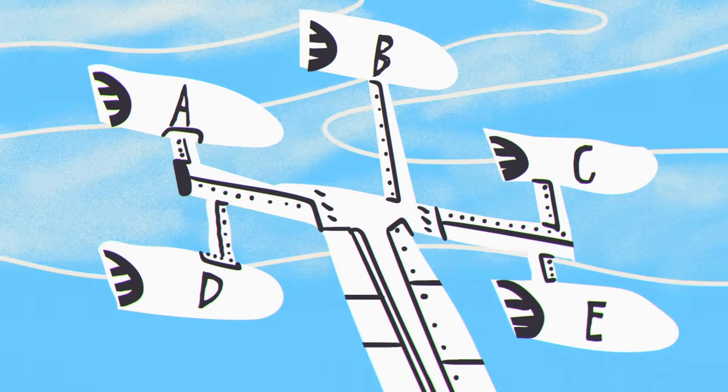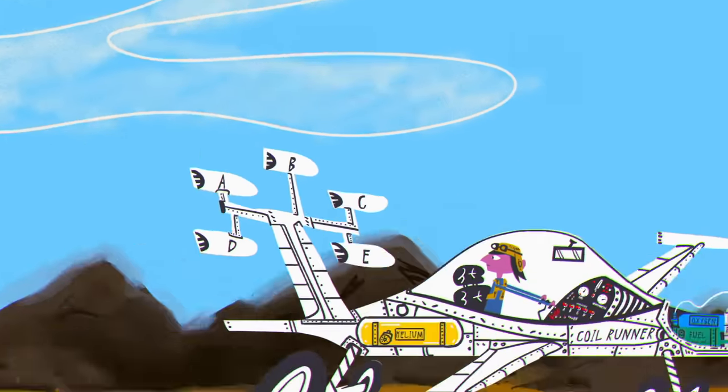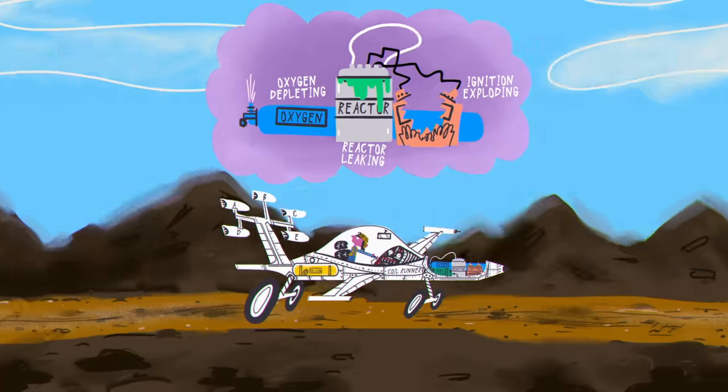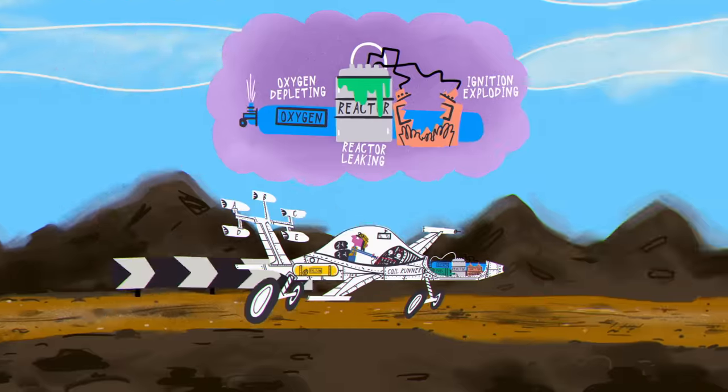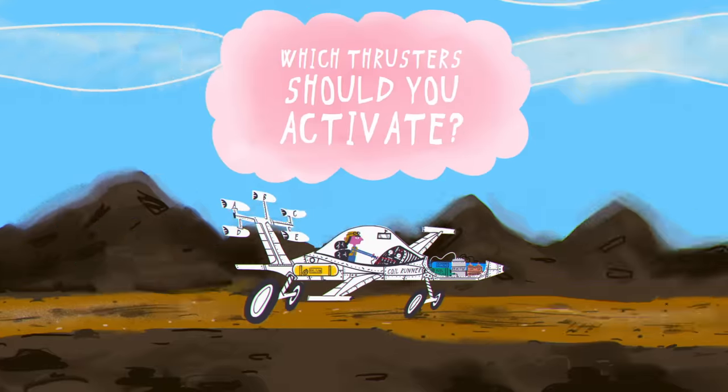You need to use as many thrusters as possible to give yourself the best chance at clearing the gap, without triggering any of the three catastrophic failures. Which thrusters should you activate?